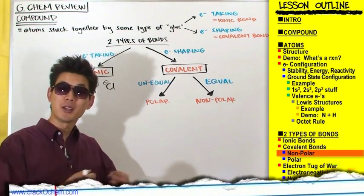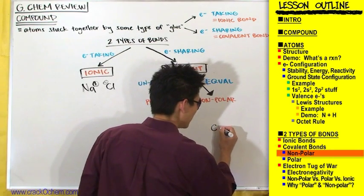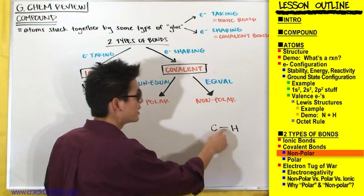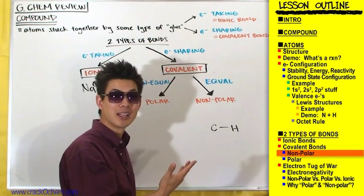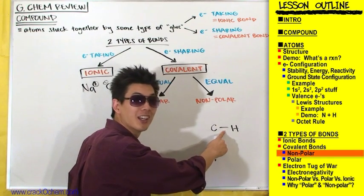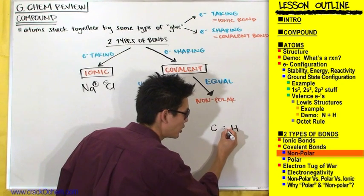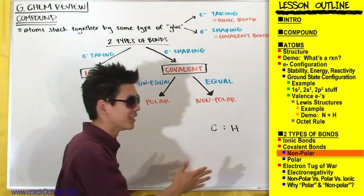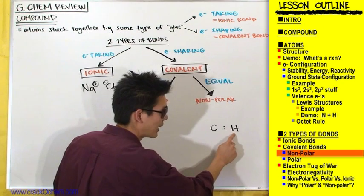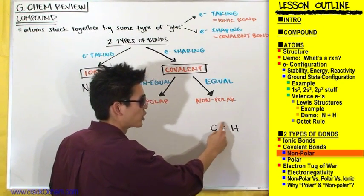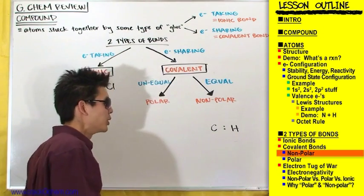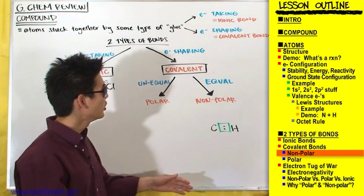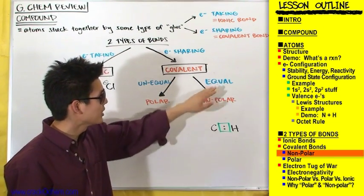An example of a nonpolar bond would be carbon connected to hydrogen by a nonpolar covalent bond. This line between two atoms represents a covalent bond — electrons are being shared. That line represents two electrons. You can draw those two electrons right in the center between the carbon and hydrogen, because they are sharing those electrons equally in a nonpolar bond. The electrons aren't closer to carbon or to hydrogen — they're right in the center, equally shared.